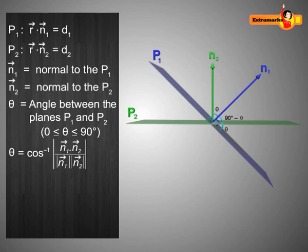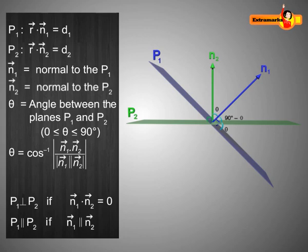Note that the planes are perpendicular to each other if the scalar product of vectors N1 and N2 is 0, and the planes are parallel if vectors N1 and N2 are parallel.